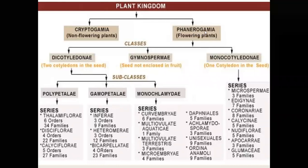Only flowering plants were classified into three classes: dicotyledone, gymnospermae, and monocotyledone.